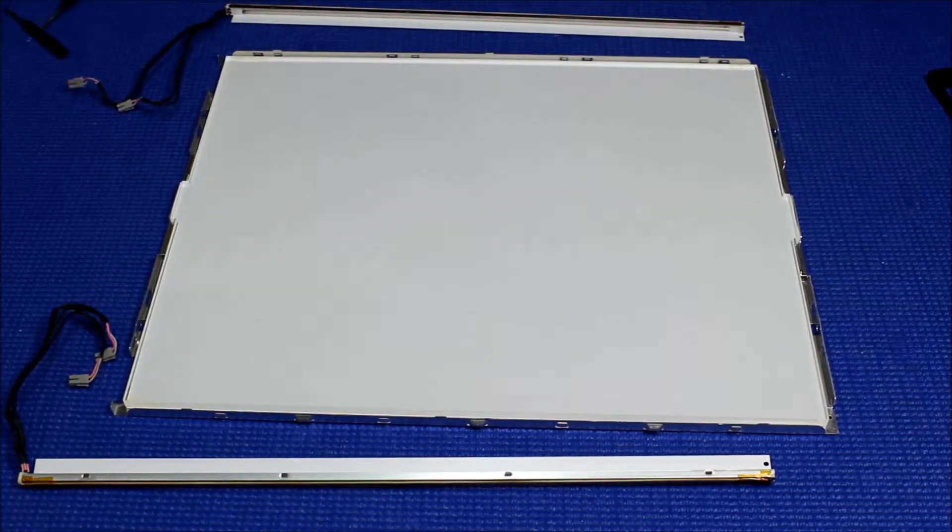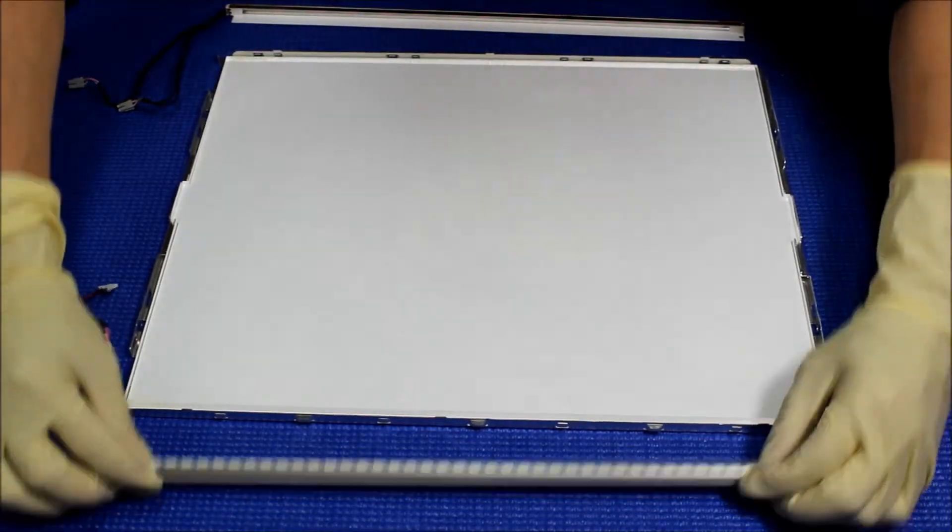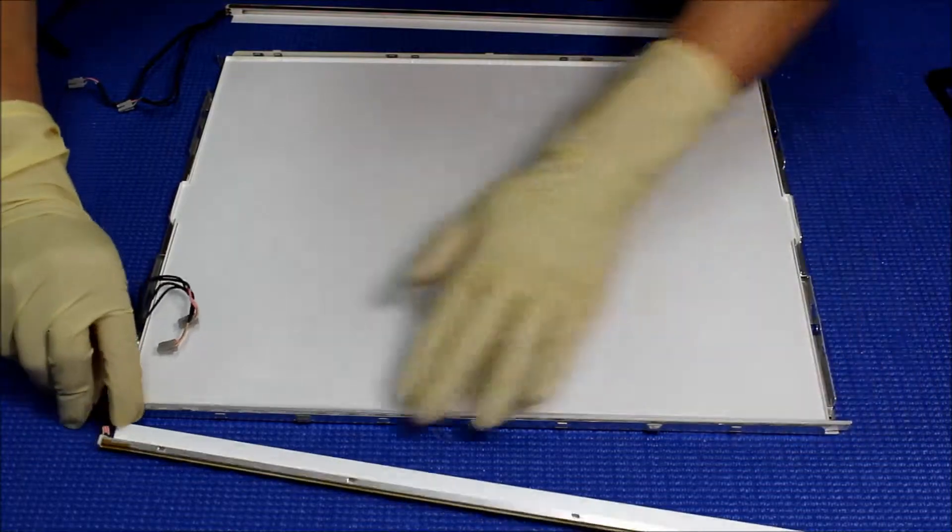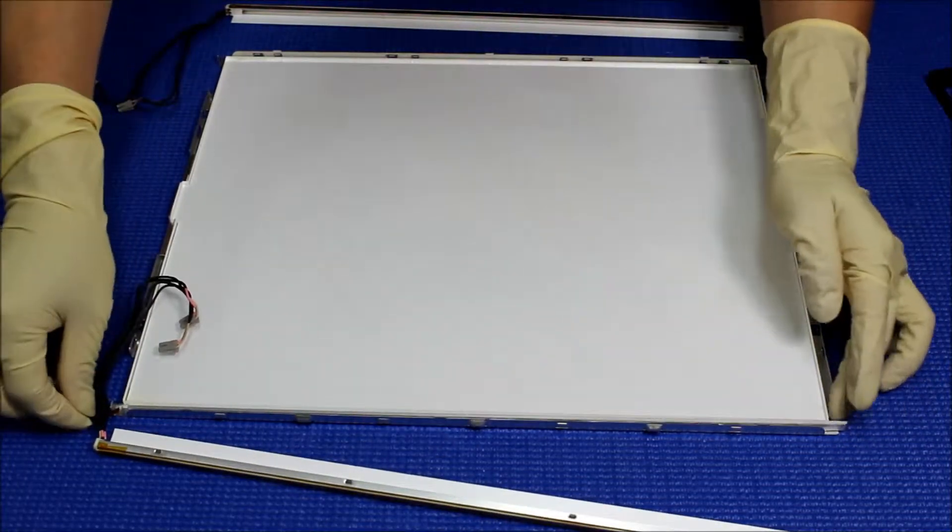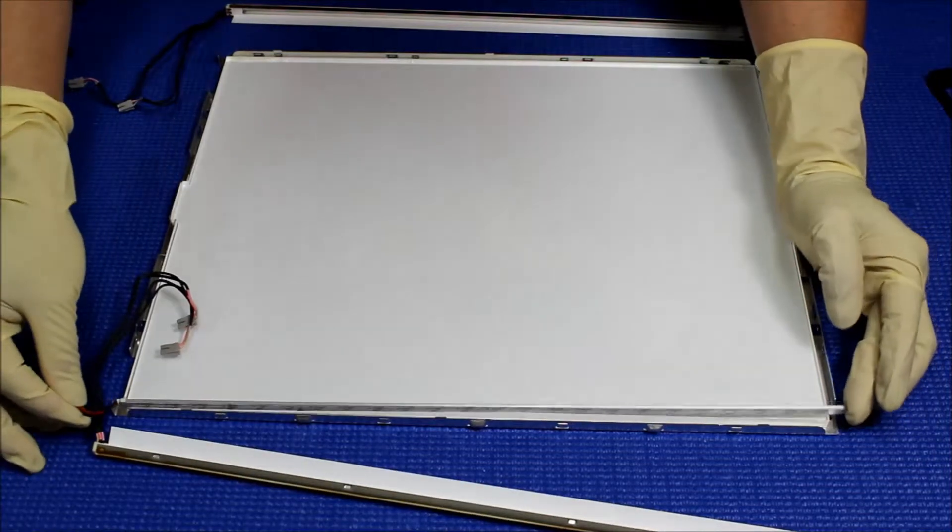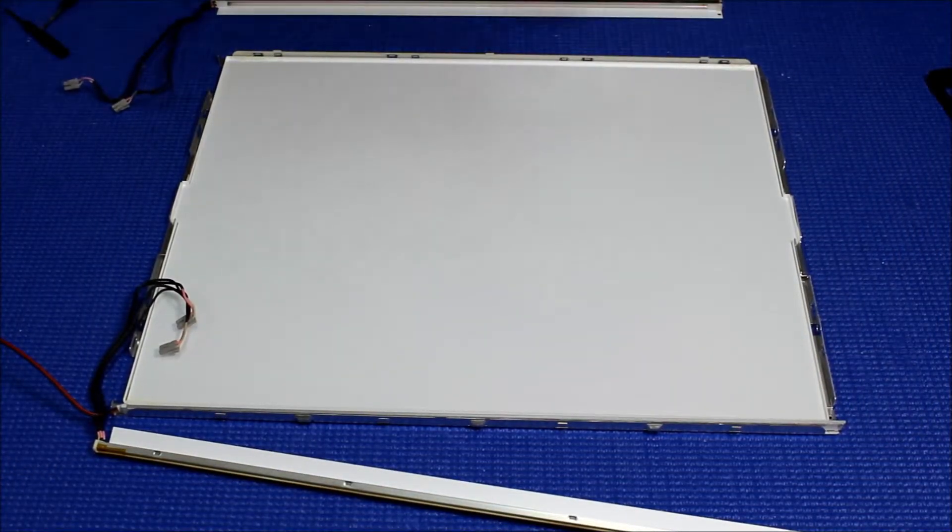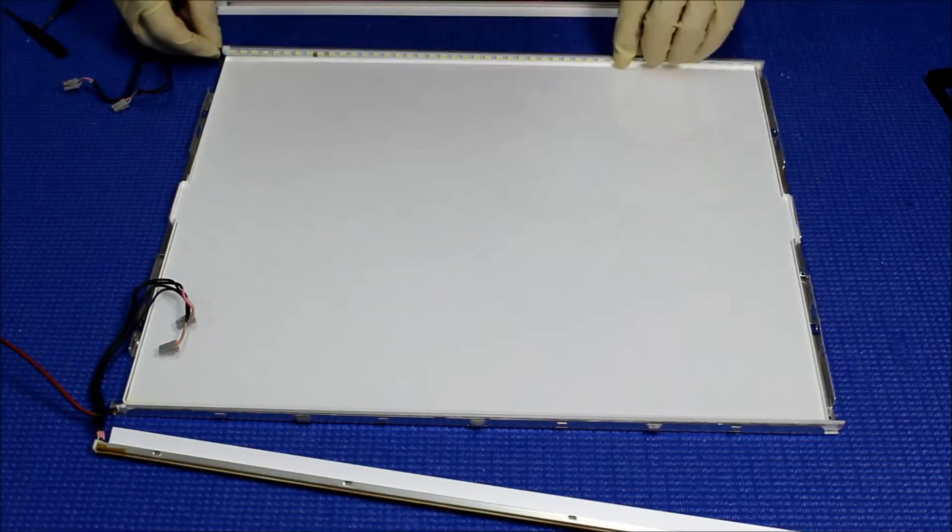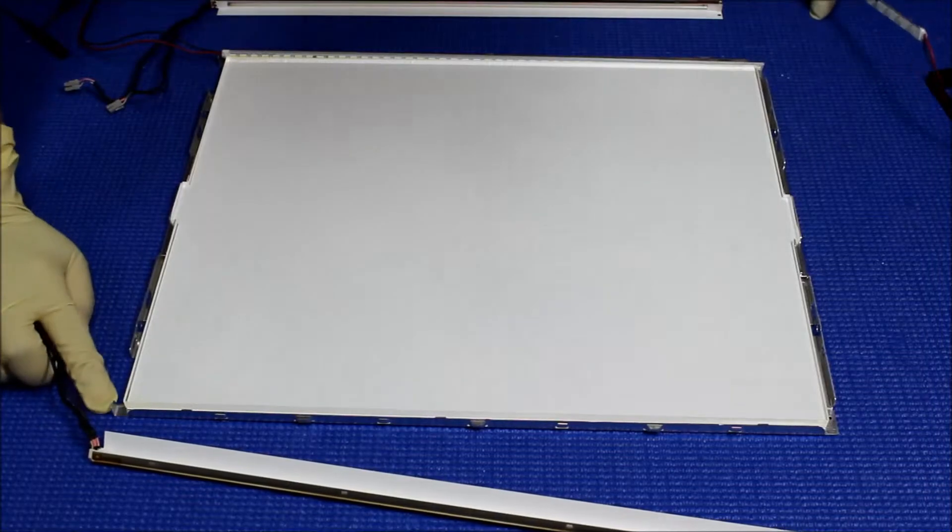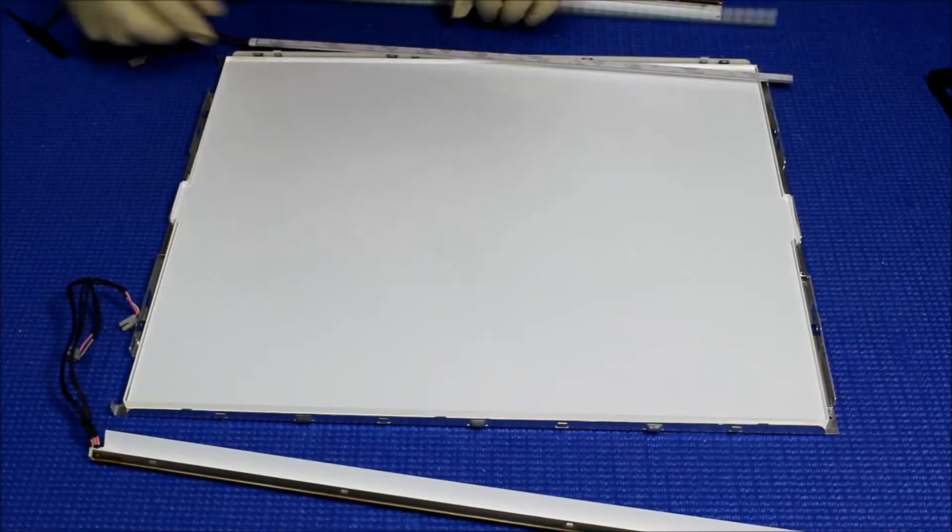So here we go. Let's take a look at the LED strips. It's not going to fit in the existing reflectors, so we have to mount it like this. So these two small clips must be removed.